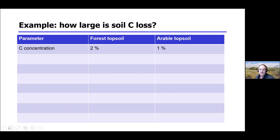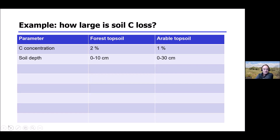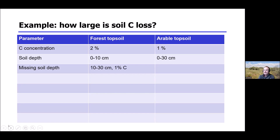Is it 50%, as the concentrations indicate, or is it less? The first thing to consider is soil depth. The forest topsoil is shallower — usually only 10 centimeters — while in arable soil everything is plowed to 30 centimeters. So there is a 20 cm depth interval missing from the forest comparison, and below the very topsoil carbon content is typically lower, around one percent.